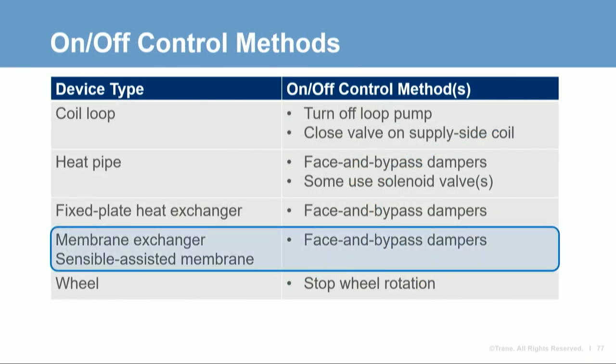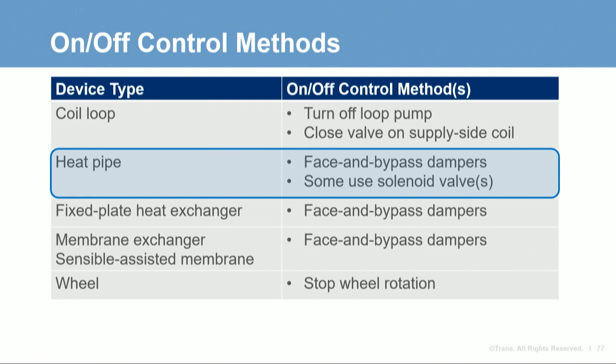Membrane exchangers aren't currently constructed with an integral bypass path, so face and bypass dampers are needed with an external bypass path around the exchanger. However, the SAM exchanger can be constructed with a bypass path through the middle. Heat pipes also use an external bypass path with face and bypass dampers, but some styles may offer solenoid valves that can prevent refrigerant from moving inside the tubes to stop heat transfer.